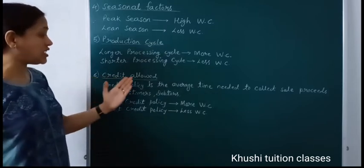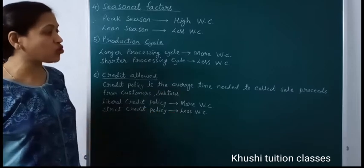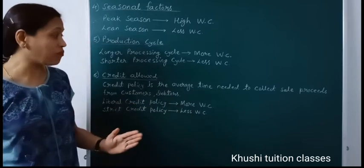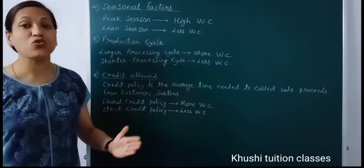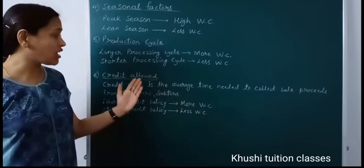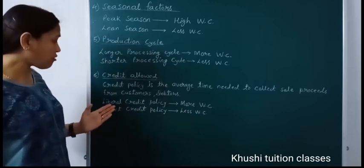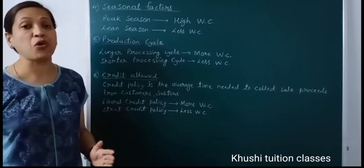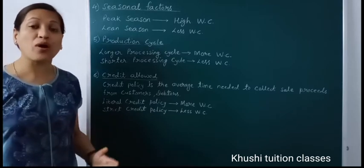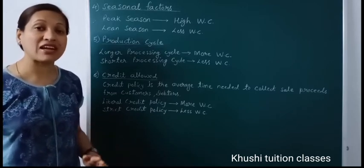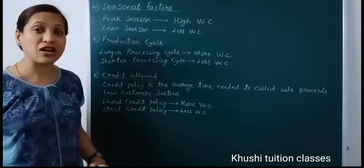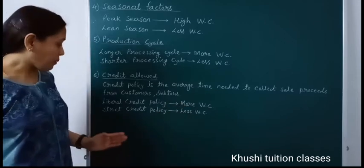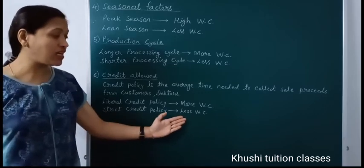The sixth factor is credit allowed. Credit policy is the average time given to customers to collect sale proceeds. If you are following a liberal credit policy — giving customers more time to pay — you will need more working capital. But if you are following a strict credit policy with shorter credit terms, you will need less working capital.